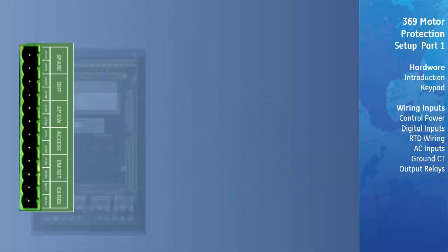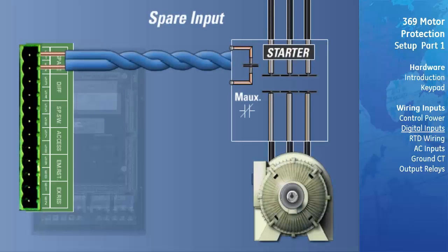In most applications, the spare input should be used to sense starter status by connecting either an auxiliary A or B contact from a breaker, or a normally open or normally closed auxiliary contact from a starter. This connection is highly recommended for use on all motors and is essential for proper operation of start inhibits such as starts per hour, time between starts, start inhibit, restart block, and backspin start inhibit.